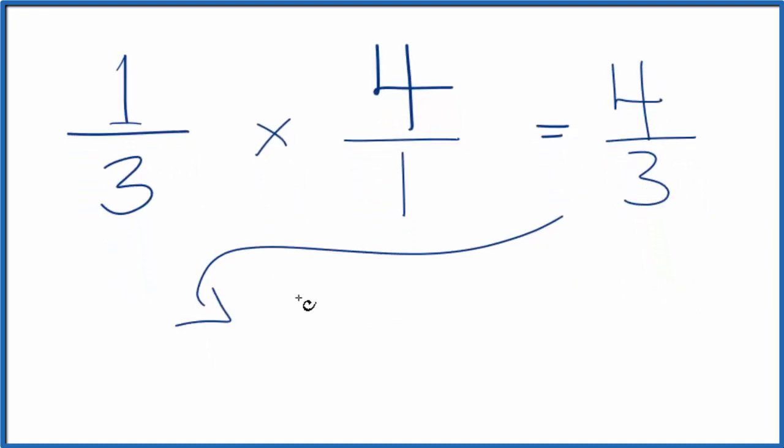So three goes into four one time with one left over. So we end up with one and one-third. That's the same thing as four-thirds.